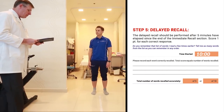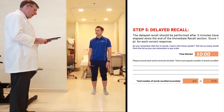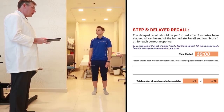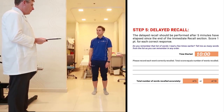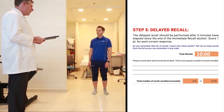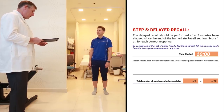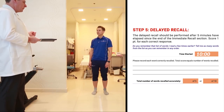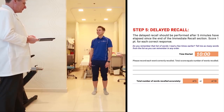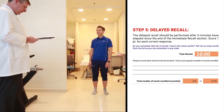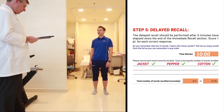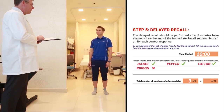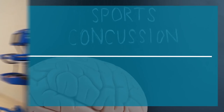The last part of the SCAT5 is the delayed recall, done last to test long-term memory. The athlete is asked to recall the list of words from the beginning of the test. He recalled: jacket, paper, cotton, ribbon — getting three out of five words correct, with some errors on specific word names. That concludes the SCAT5.